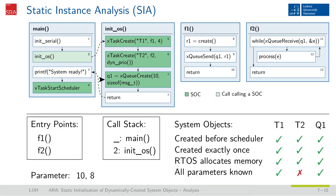The analysis of the next instruction, the xQueueCreate, delivers all the parameters for this queue. The semantics of the operating system, which is FreeRTOS in this case, denote that the operating system is responsible for providing the memory to store the queue elements — this is the case for task stacks and control blocks as well. We now have finished the analysis of this function, so we pop it from our call stack and continue the main function. The printf function is not marked as relevant and therefore not further analyzed. The last instruction of the main function is the call to start the scheduler. This instruction changes the state of the operating system model, as all tasks created after the scheduler starts have to be treated differently, as they do not belong to the initial set of runnable tasks.